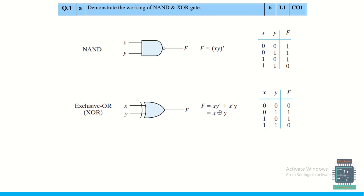For the NAND and XOR gate question, you need to explain the working using the gate structure, expression, and truth table. The output of the NAND gate is one for specific input combinations — it is NOT of AND gate. For XOR gate, since it is exclusively OR, the output is true only when exactly one of the two inputs is true.